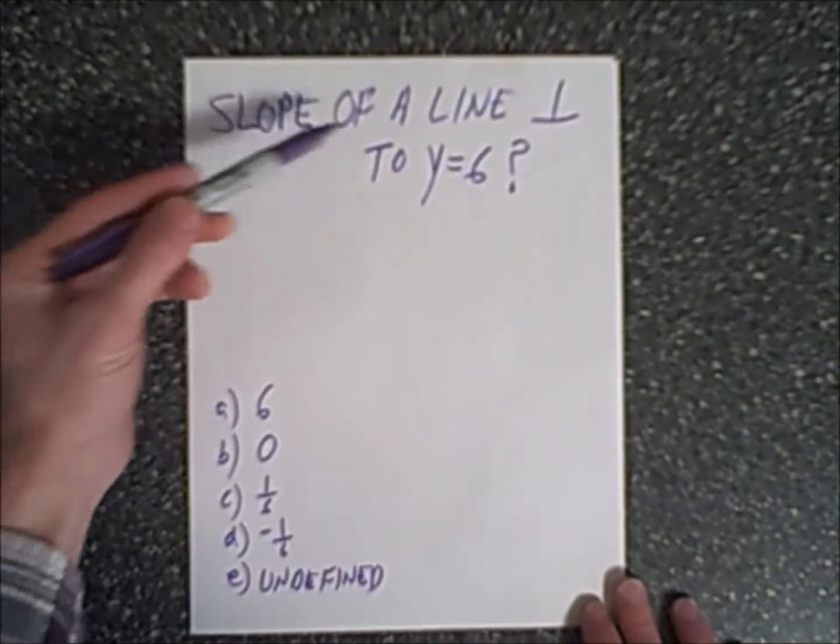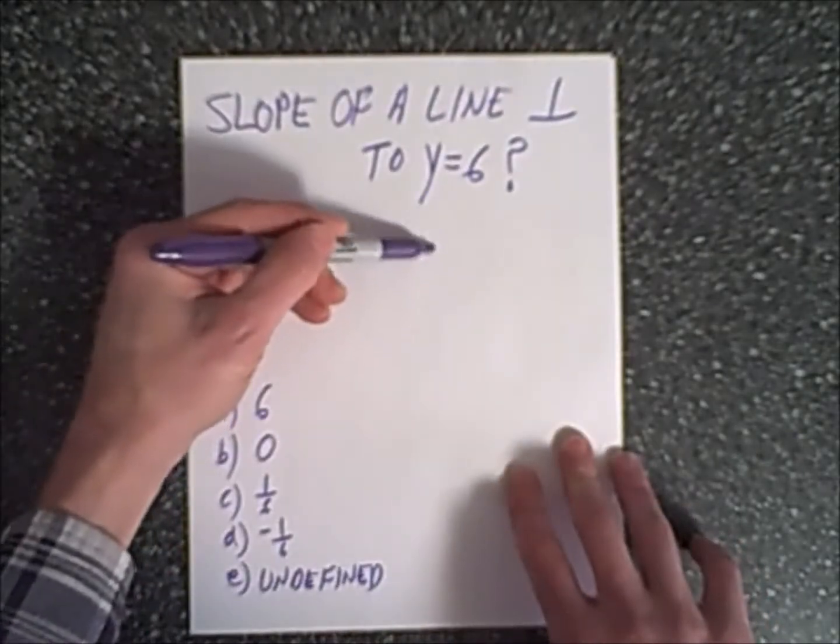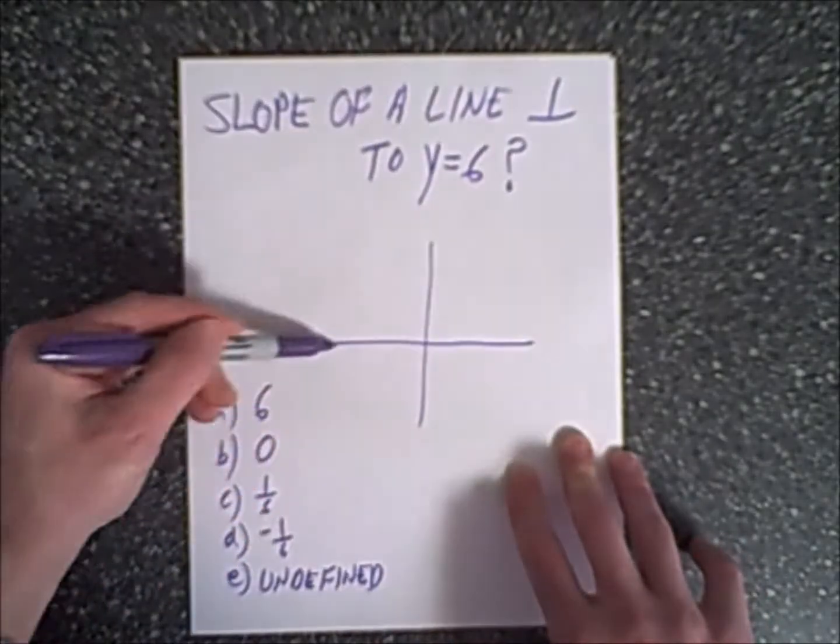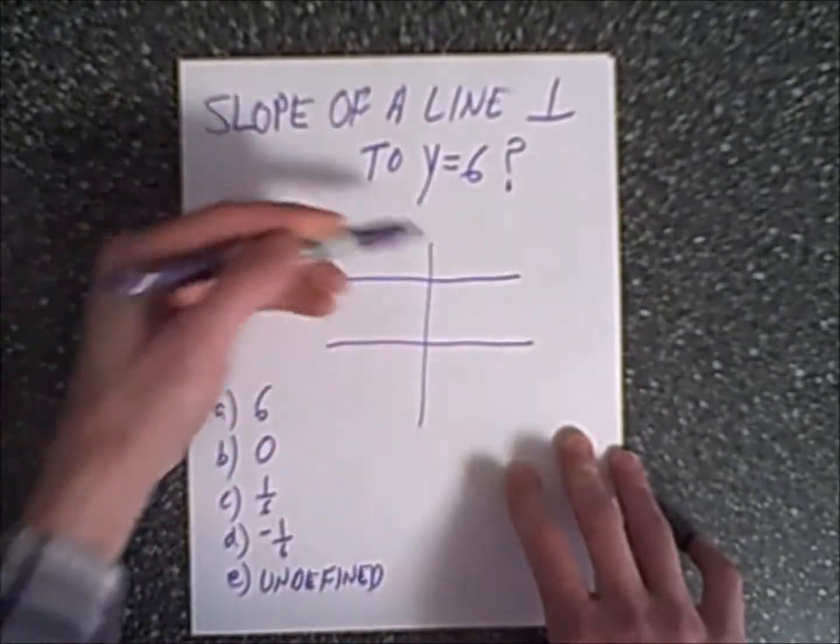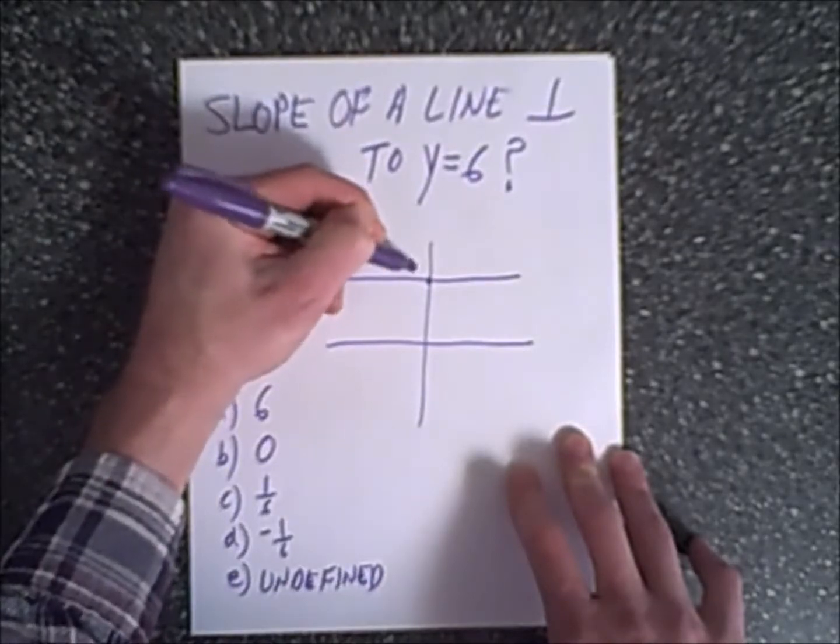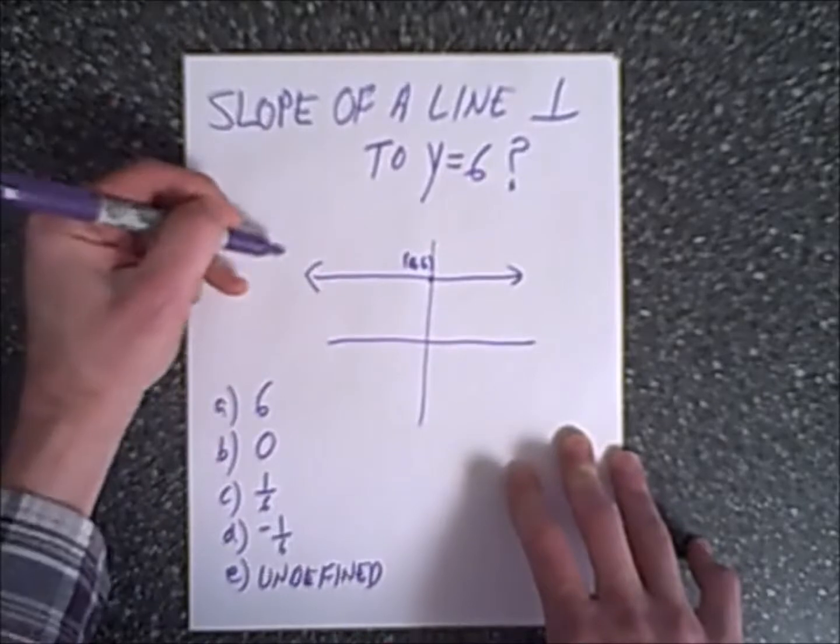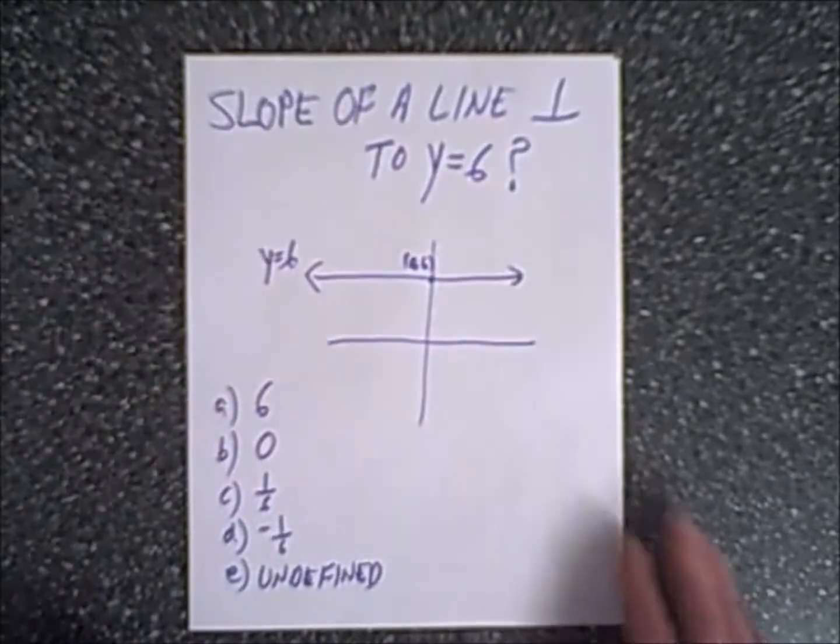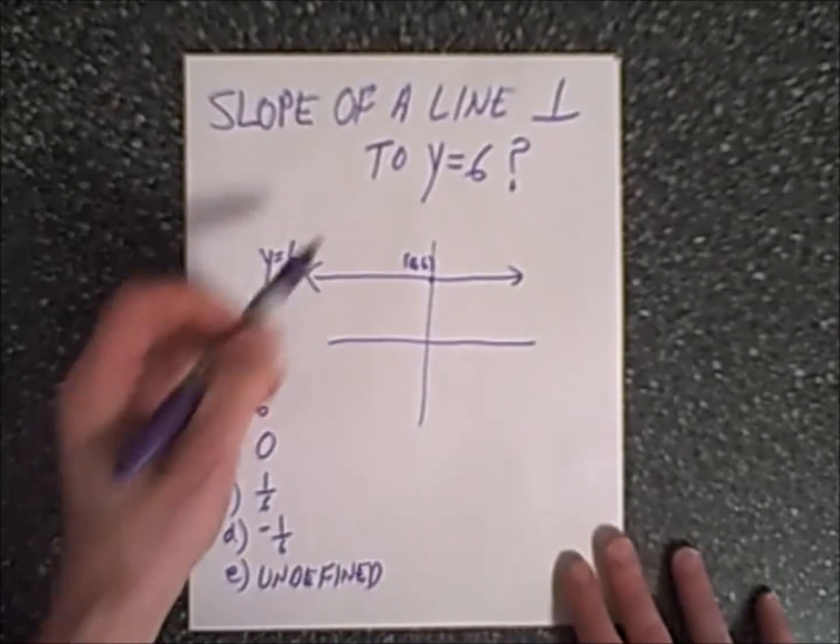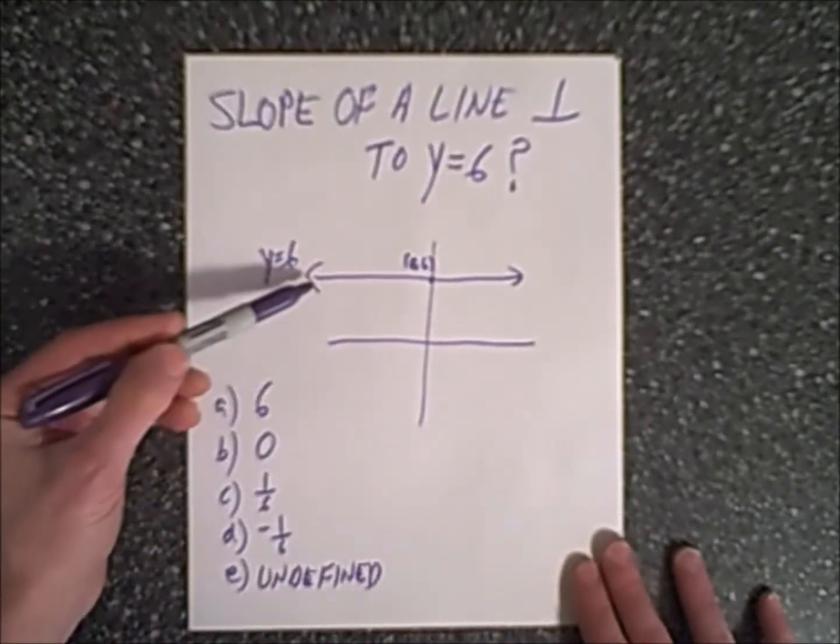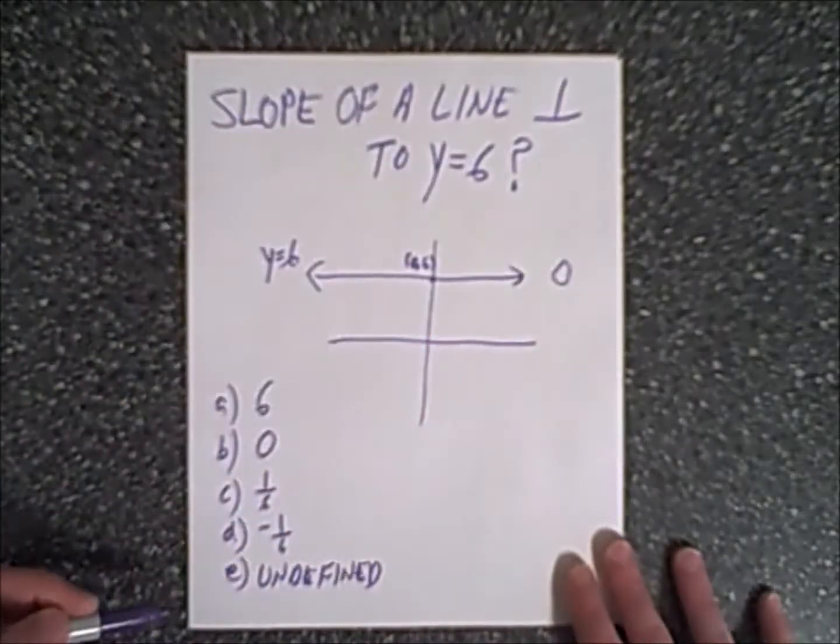We want to find the slope of a line perpendicular to y equals 6. Hopefully you know that y equals 6 is not just a number 6, it's actually a horizontal line going through the y-axis at 6. This is our line y equals 6. We need to know what's the slope of y equals 6, and hopefully you remember that if it's a horizontal line, the slope is indeed 0.